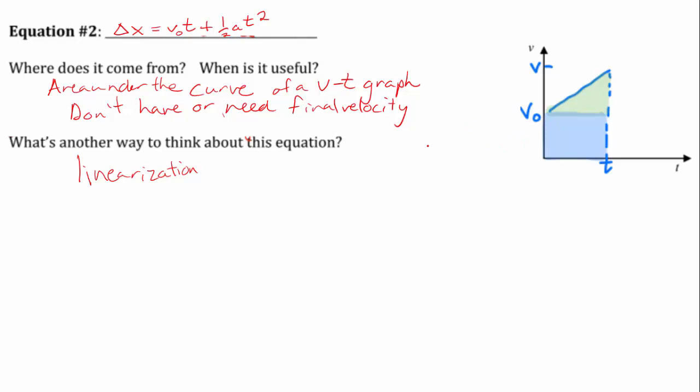So we learned, we came up with the idea that displacement is the area under the curve for a v-t graph. So I'm just going to write out area under curve. And the area under this can be broken up into two different sections here. We have a rectangular section and a triangular section. So remember, displacement equals area under the curve.